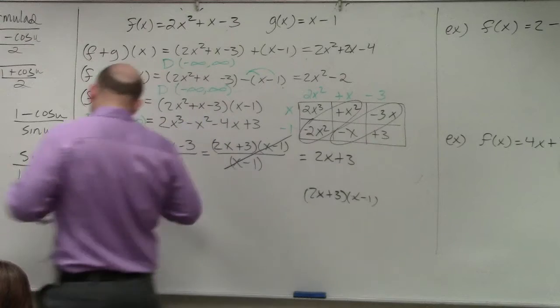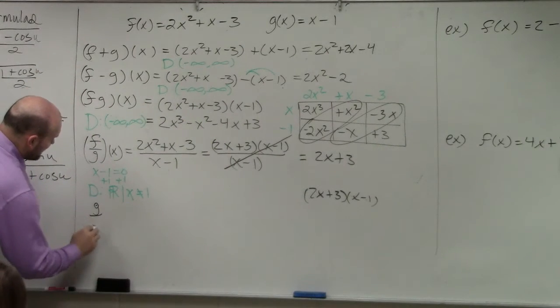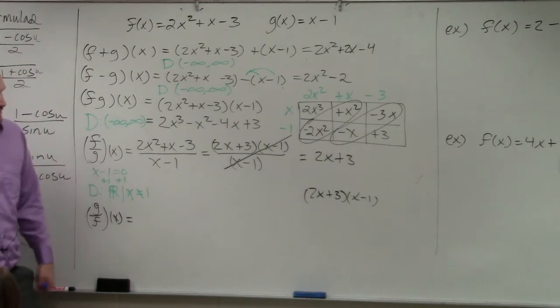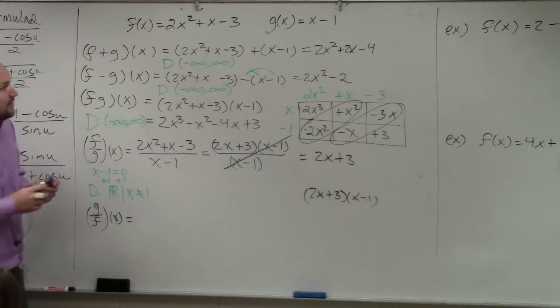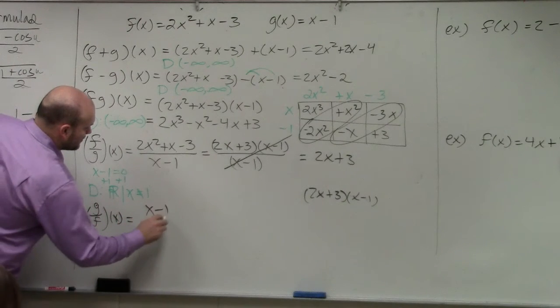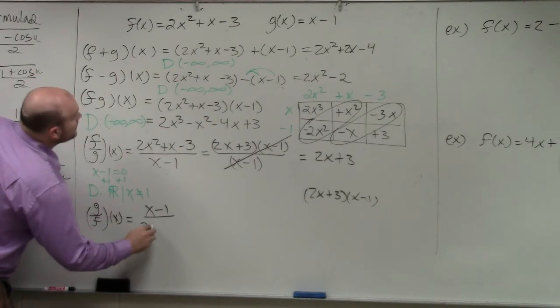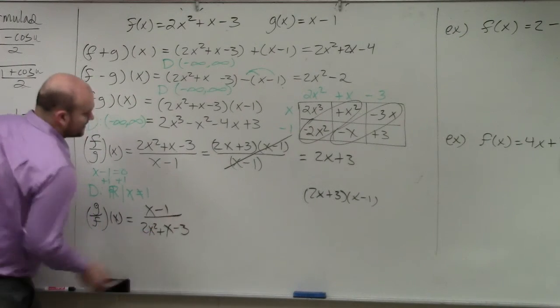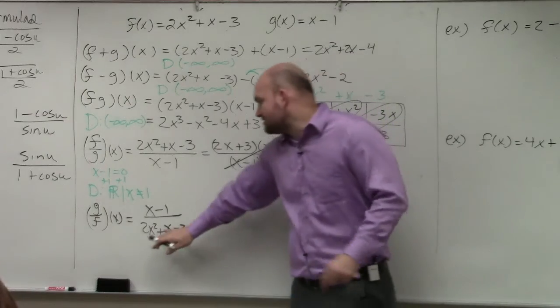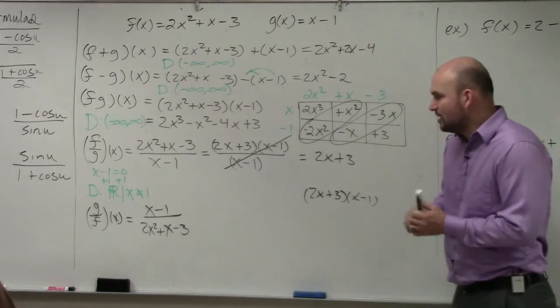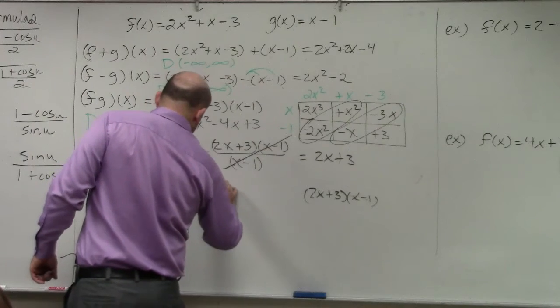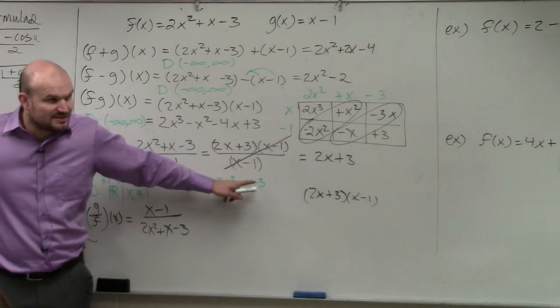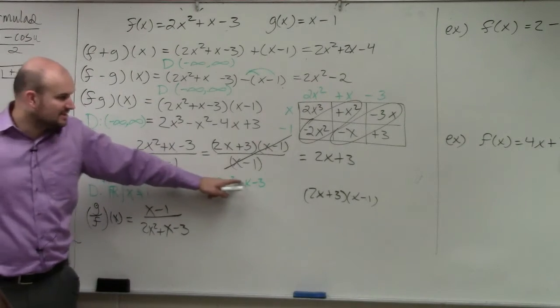And the last one we're going to do, g of f of x. I'm doing a lot of these examples. You don't have to do every single one for each one of these. But now, all we're doing is taking x minus 1 over 2x squared plus x minus 3. Now, do we already know if we set this equal to 0, if I say 0 equals 2x squared plus x minus 3, can we solve this? Do we already solve this? Yes. What's the factored form?